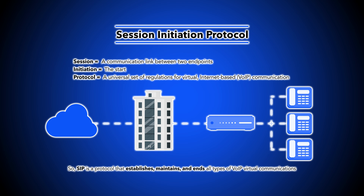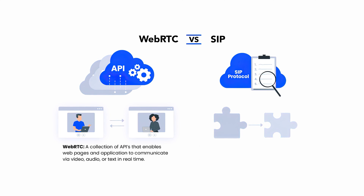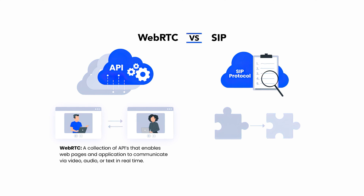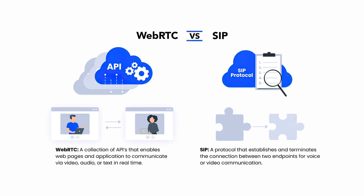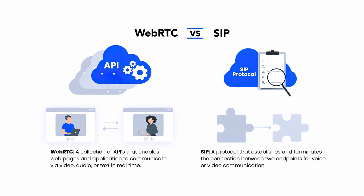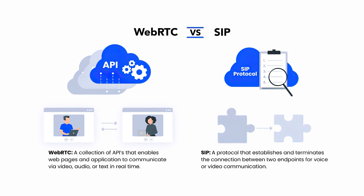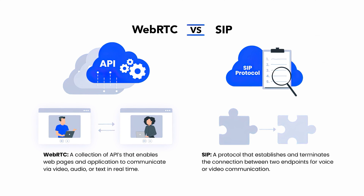Put simply, SIP establishes sessions for real-time communication over the web — keep in mind that this is just one step of the larger WebRTC process. The difference between WebRTC and SIP is that WebRTC is a collection of APIs that handles the entire multimedia communication process between devices, while SIP is a signaling protocol that focuses on establishing, negotiating, and terminating the data exchange. Protocols are just one specific part of an API, so SIP is just one potential subroutine that WebRTC can utilize.